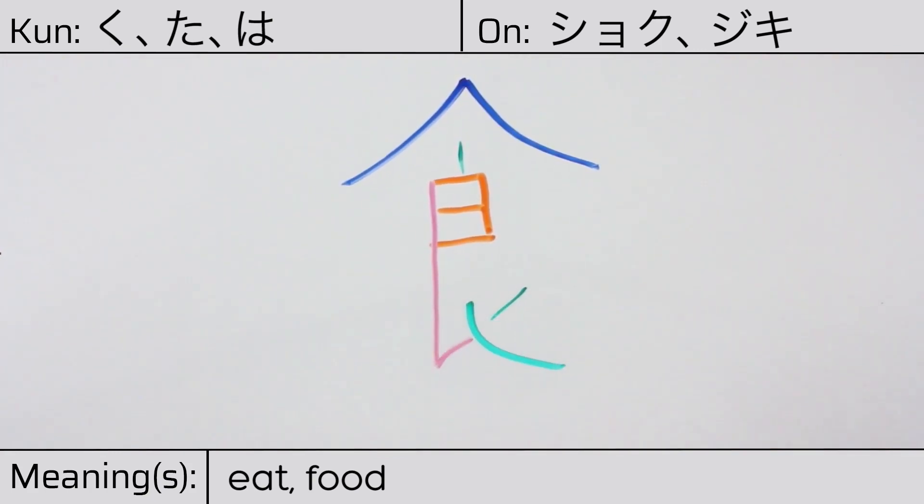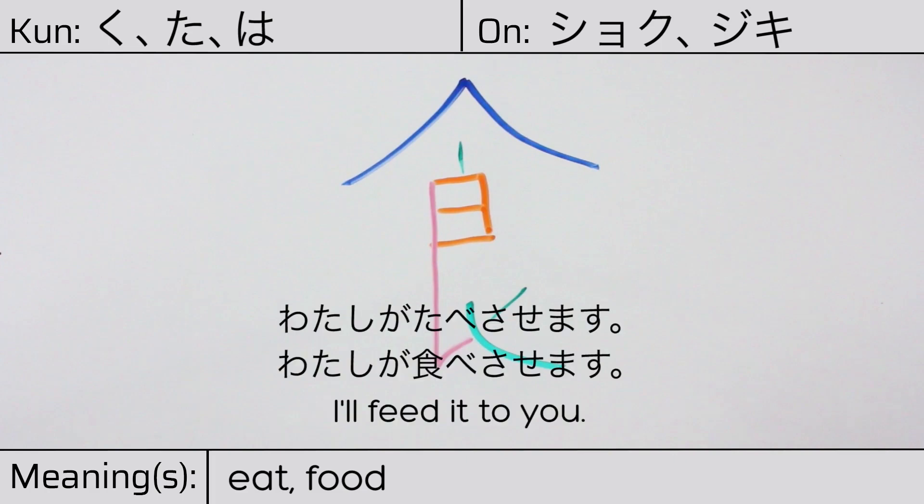Our example sentence is 私が食べさせます。 I'll feed it to you.